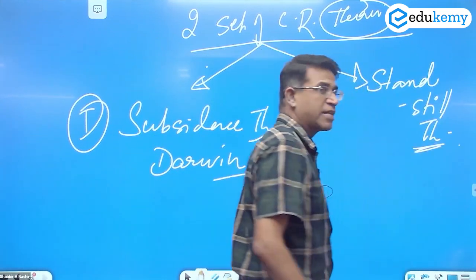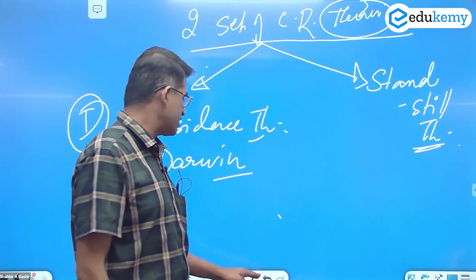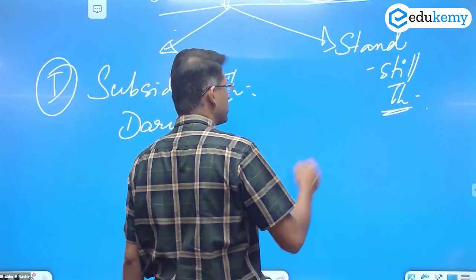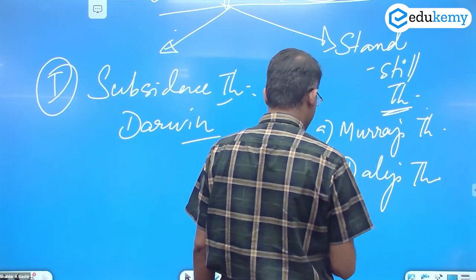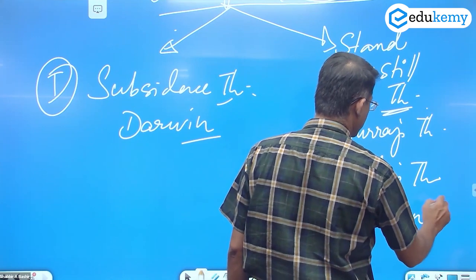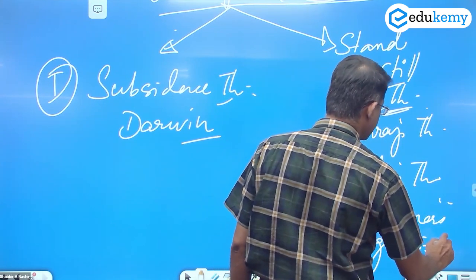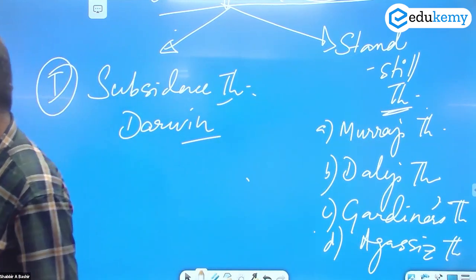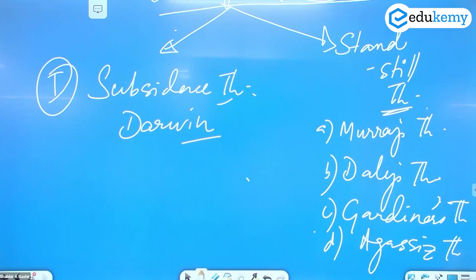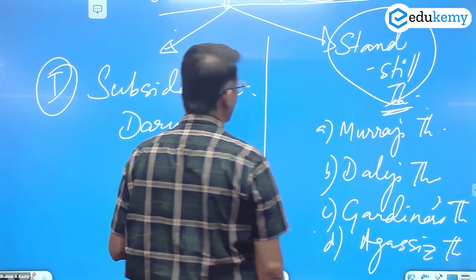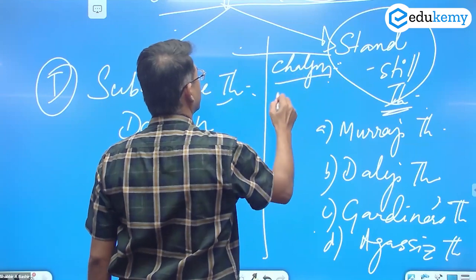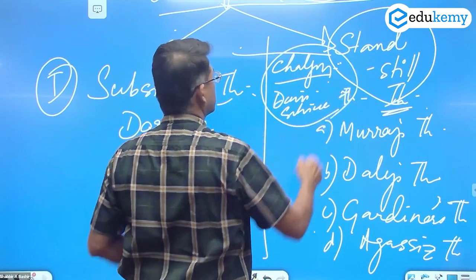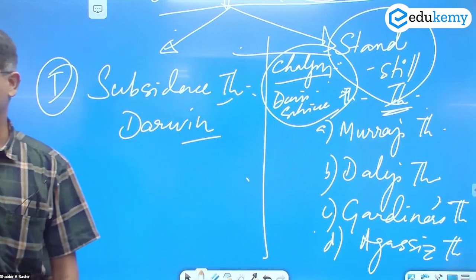The second theory is called the standstill theory. The standstill theory was given by different people: Murray's theory, Daly's theory, Gardner's theory (G-A-R-D-I-N-E-R), Agassiz's theory. These are different theories, but they belong to a category called standstill theories. These are challenging Darwin's subsidence theory.